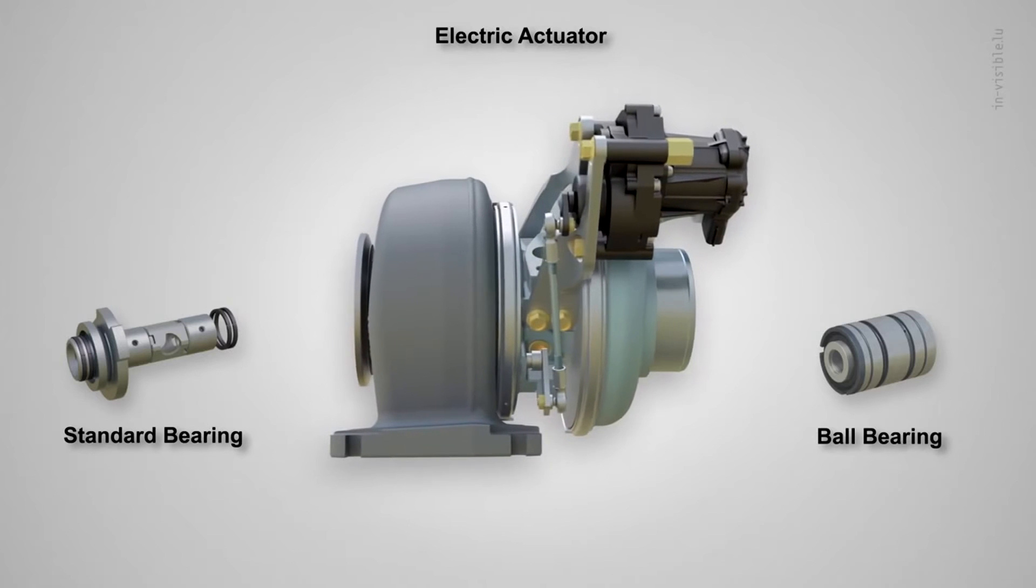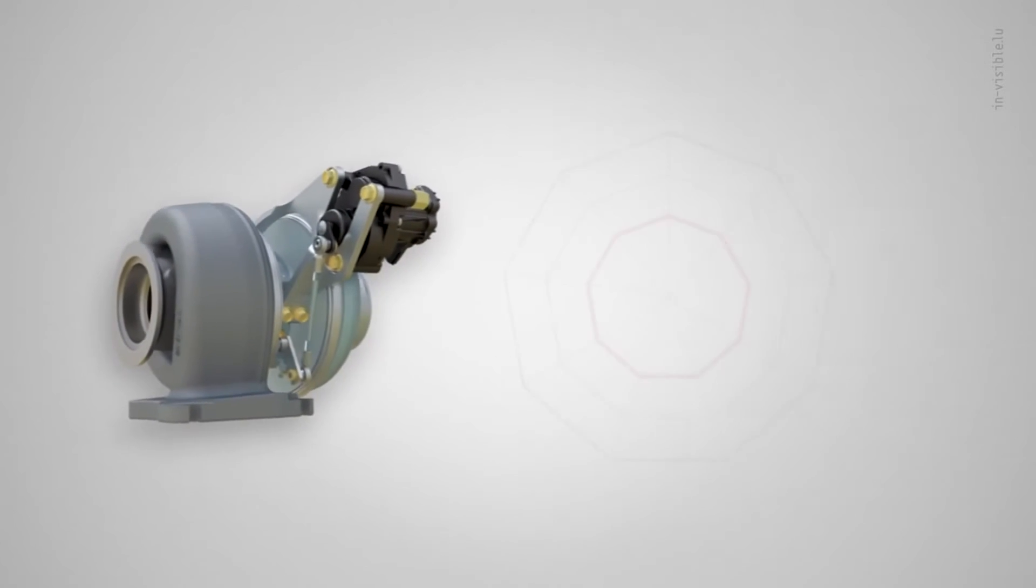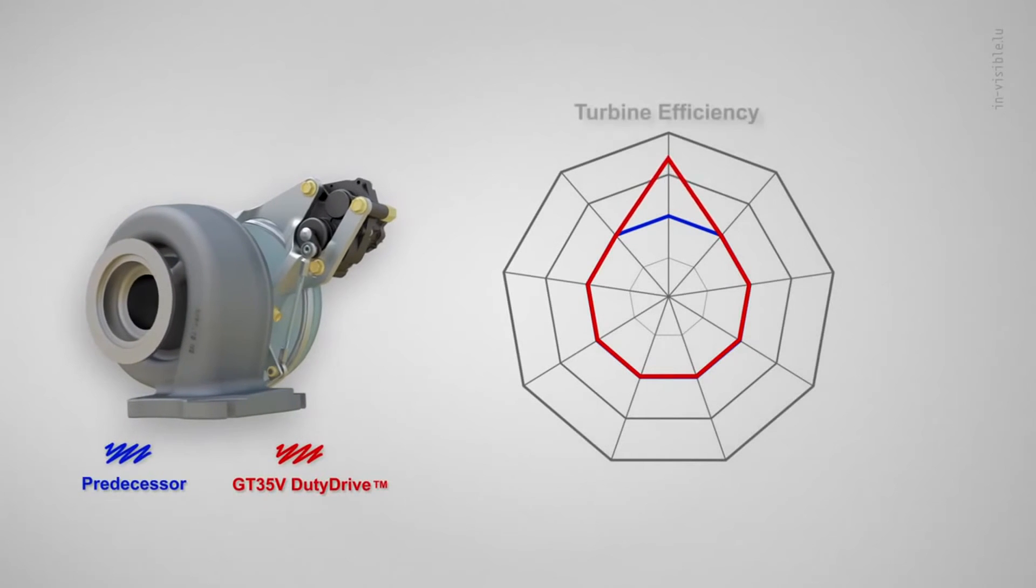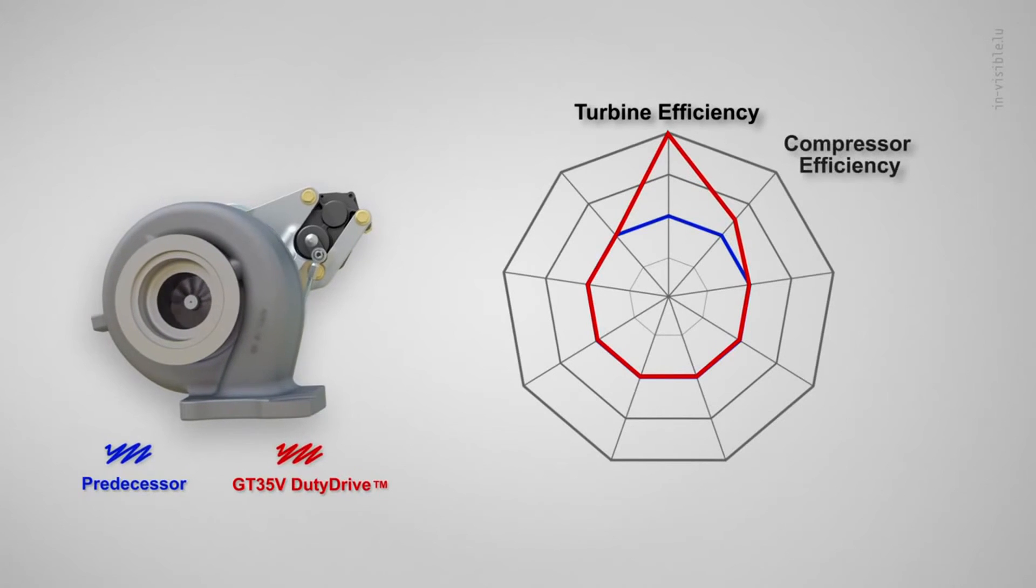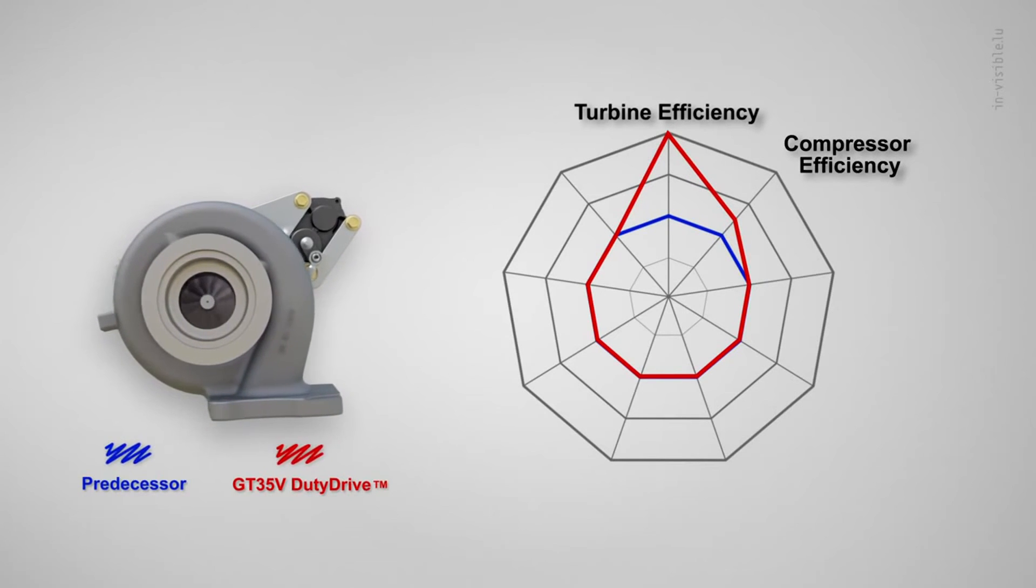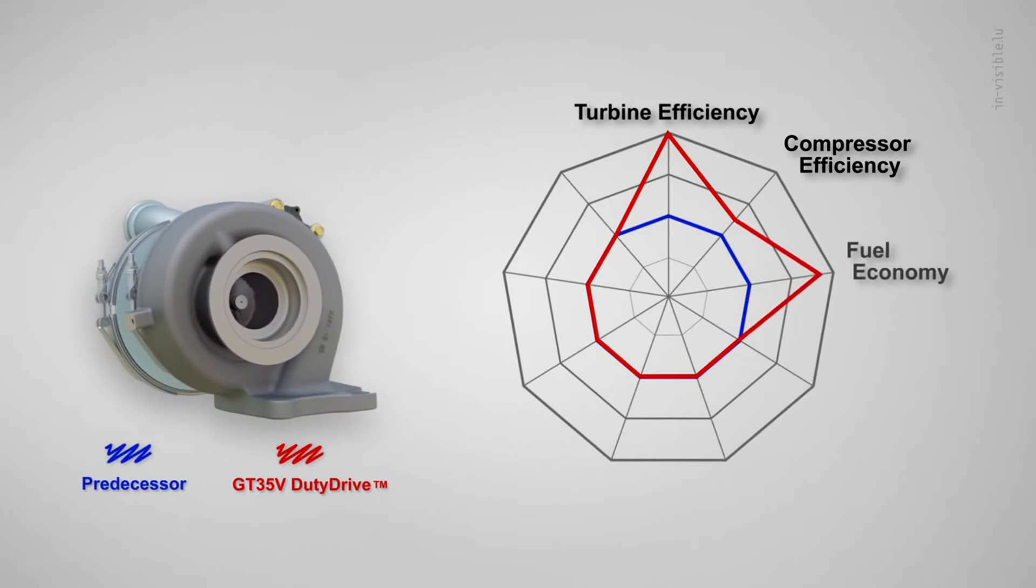The generation 3 GT35 is a significant improvement over its predecessor. It offers an improvement of 2 to 3 points of turbine efficiency and 1 to 3 points of compressor efficiency at higher pressure ratios, which sum together to deliver significant fuel economy savings.